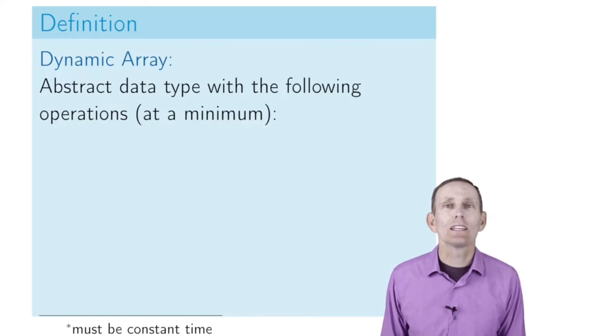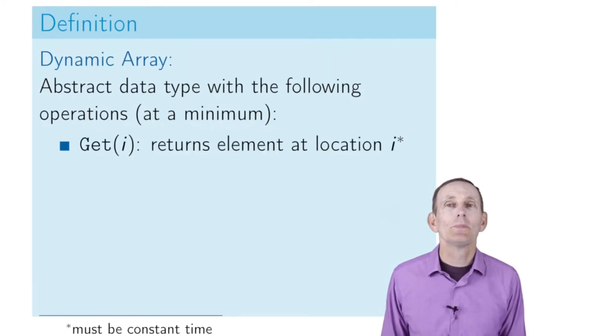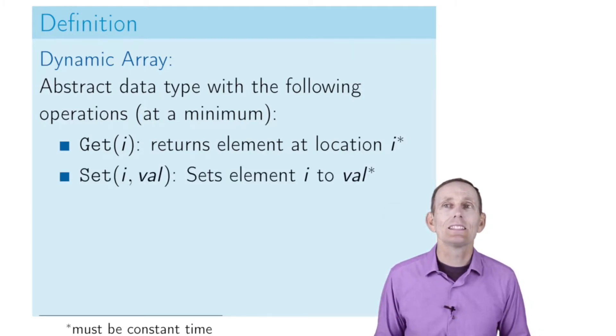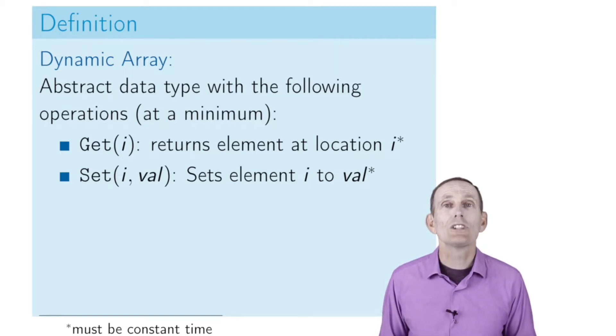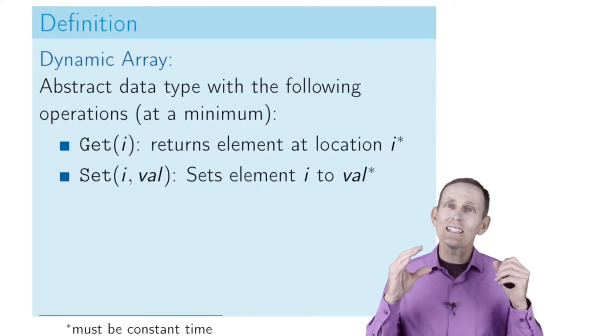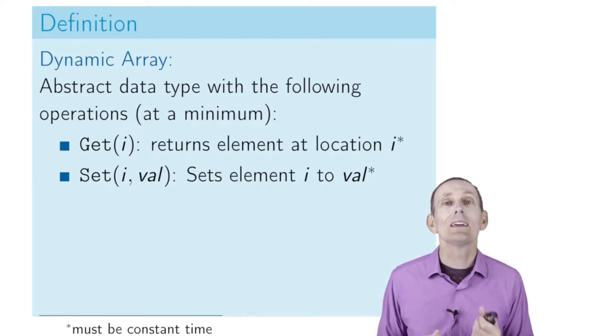A dynamic array is an abstract data type. Basically, you want it to look like an array, so it has the following operations at a minimum: a get operation that takes an index and returns the element at that index, and a set operation that sets an element at a particular index to a particular value. Both of those operations have to be constant time, because that's what it means to be an array - random access with constant time to the elements.